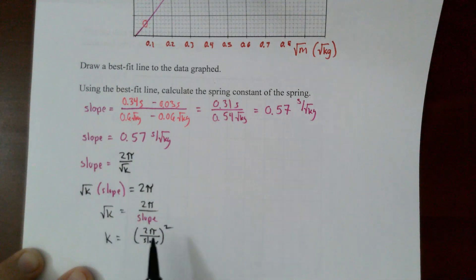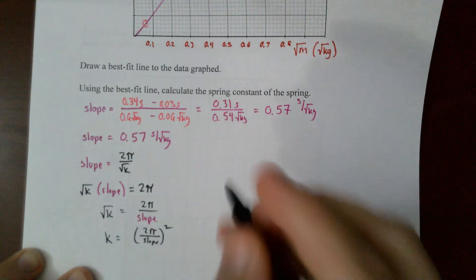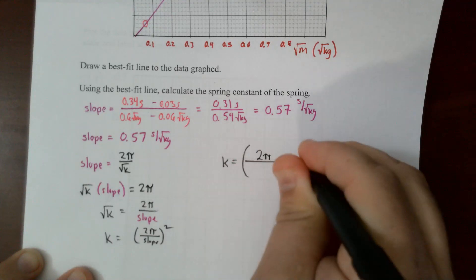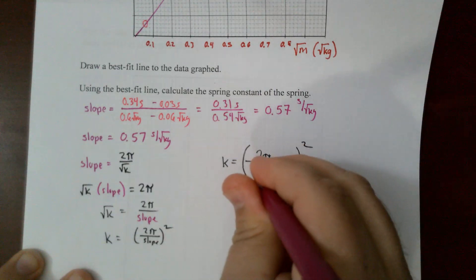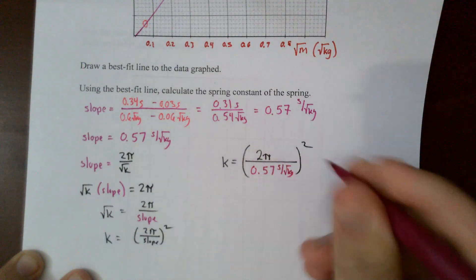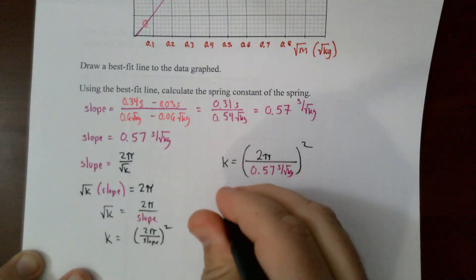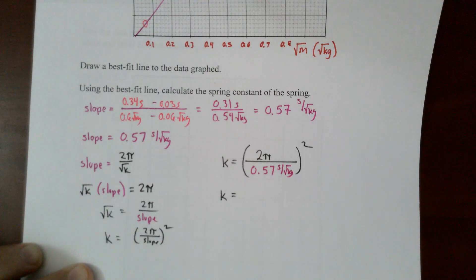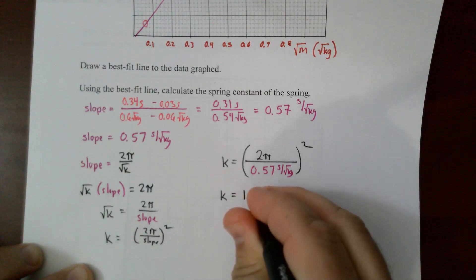Now I substitute the slope value: k = (2π / 0.57)². Computing: 2π / 0.57 ≈ 11.0, and squaring gives approximately 122. So k ≈ 122.